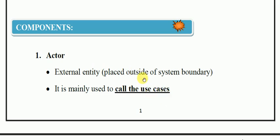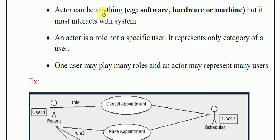Use cases can be called when the system interacts with the user. Because both the system and the user can be actors, we show the interaction between them. Any user can be an actor. An actor is a role, not a specific user — it is not a particular user, it is a role. It represents only a category of user.